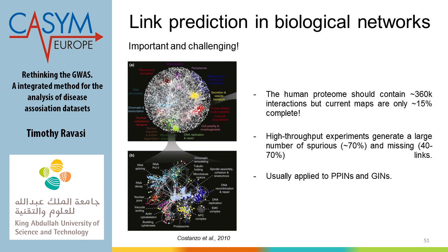Why do we bother with network sparsification? Because biological networks are very sparse — they are not like the internet or Facebook. To collect all the experimental data takes a long time, there are false positive and false negative problems, for example in protein-protein interaction or genetic interaction in human. So it's important to understand how methods work in sparse networks.